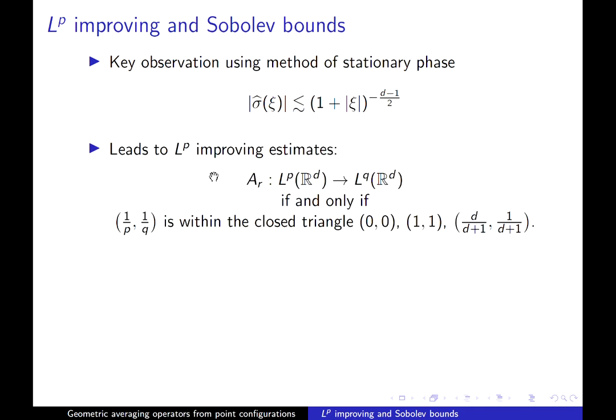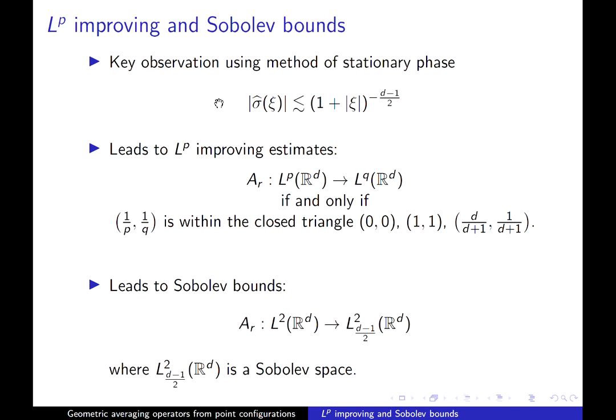Now, if you hope to see any improving properties of this operator, then they should come from the fact that this symbol that you're working with, this Fourier multiplier, is somehow better than just being one. And that is indeed the case. The classic calculation using stationary phase shows that this Fourier transform of the natural measure on the sphere decays like d minus 1 over 2 out at infinity.